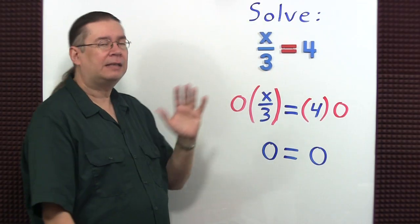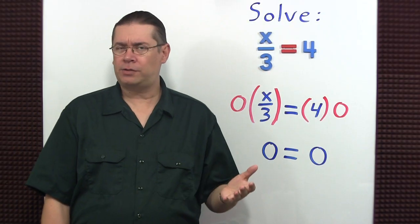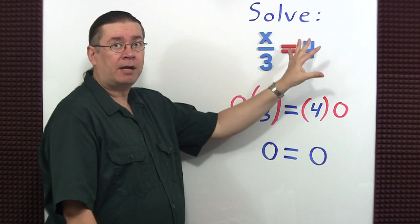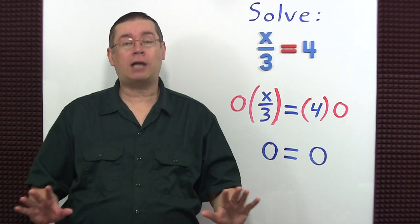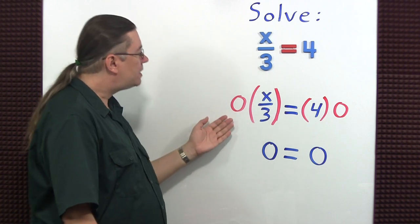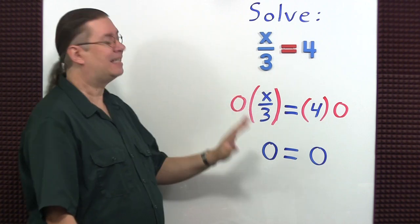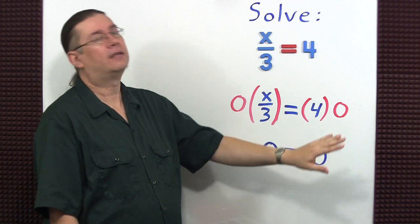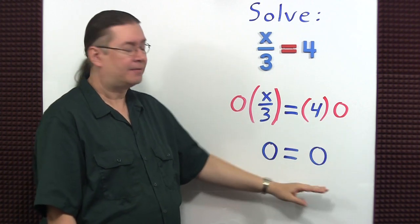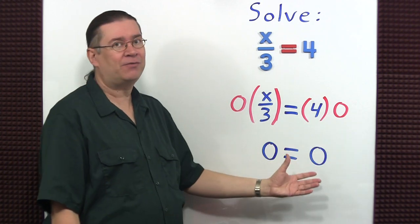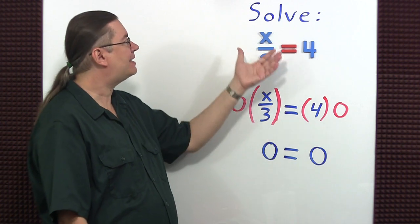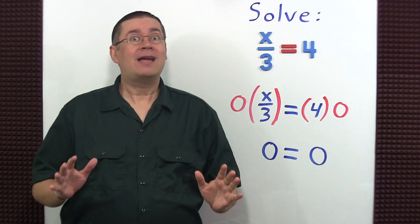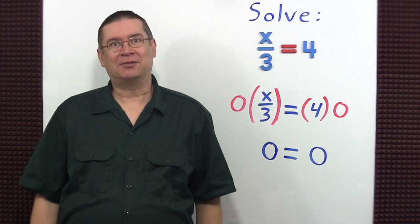Before we solve this problem, let me explain what they mean by nonzero number. If you're given an equation and you want to multiply through by a number, that number cannot be zero. Why? Well, what's zero times anything? Zero. What about the other side? Four times zero? Zero again. Zero equals zero. Oh, that's true, but that really doesn't help me find the value of X that would make the original equation true. Therefore, never multiply an equation through by zero.